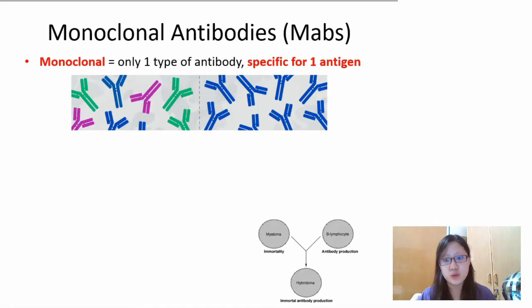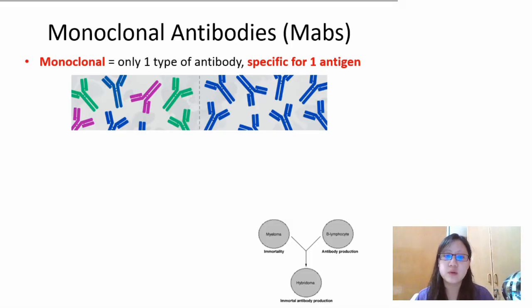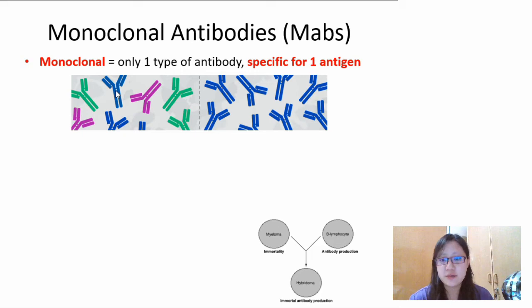And therefore when we have an immune response towards that particular one pathogen, the antibodies produced are not just one type — there are many types. However, each type of antibody is specific for one antigen; that does not change.